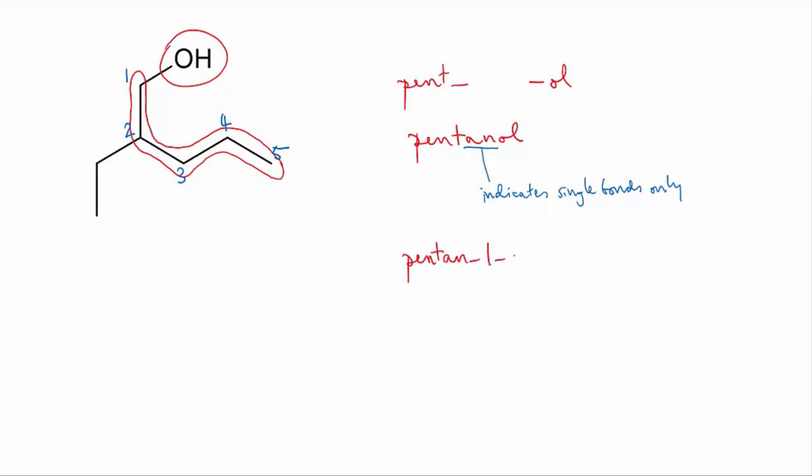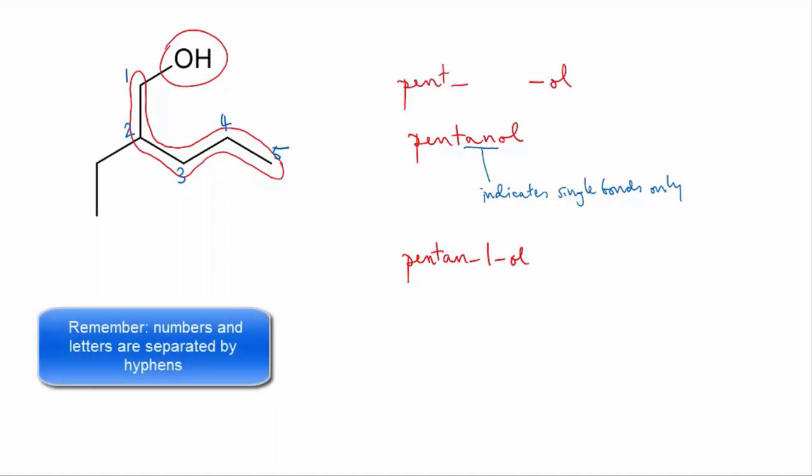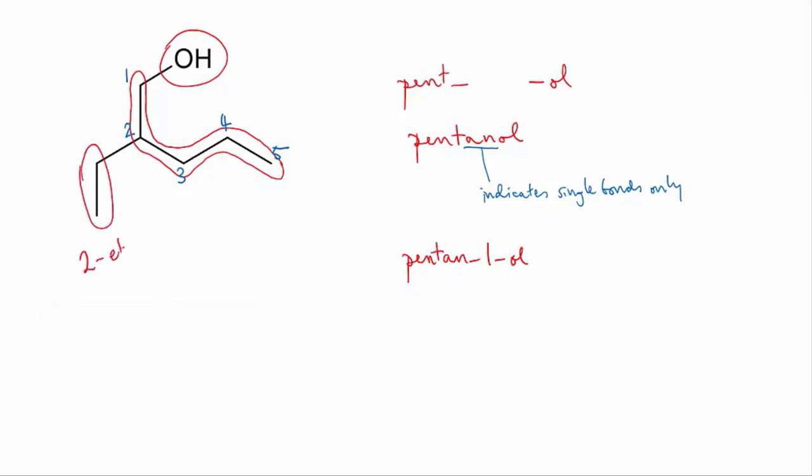So, that makes it pentan one ol. Notice that we separate the numbers and letters by hyphens when writing a name. And the substituent is a two-carbon chain, so it's called ethyl, and it's on carbon number two. So, the complete name is two ethyl pentan one ol.